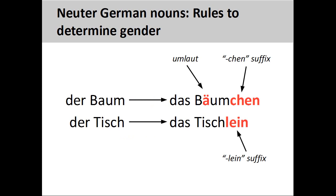All diminutive constructions will be neuter. Nouns in their diminutive form indicate a smaller version of something, or communicate informality, cuteness, or affection. To turn a noun into its diminutive form, you add the suffix '-chen' or '-lein' to the noun and, if possible, add an umlaut to the noun vowel. For example,